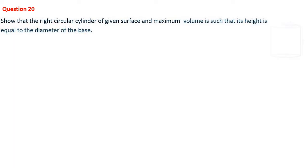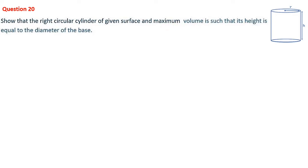Here there is a right circular cylinder. The given surface means surface area is given — it is a constant. The total surface area is given and is constant. The condition of maximum volume means we have to maximize the volume such that its height is equal to the diameter of the base. The base radius is r, so the diameter is 2r, and we have to prove that h = 2r.